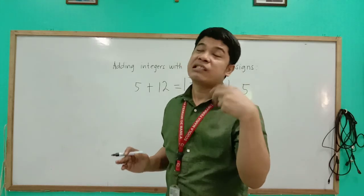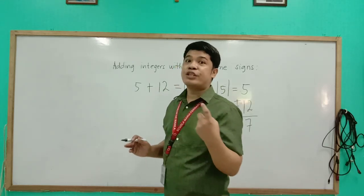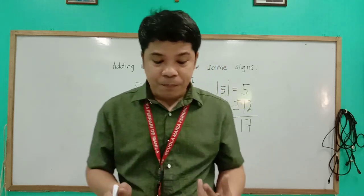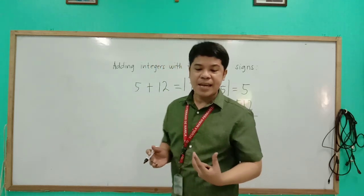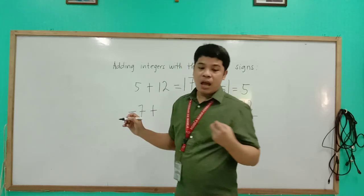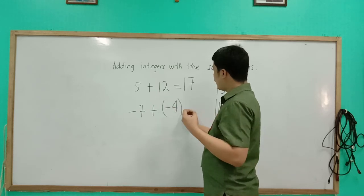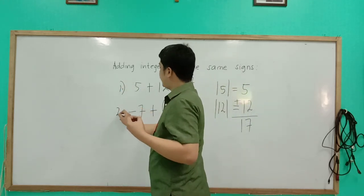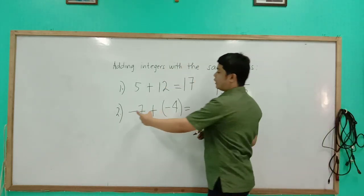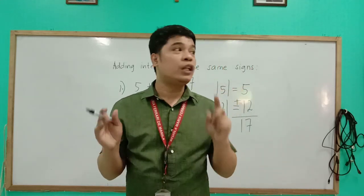For better understanding of this lesson, I will be discussing another problem. The second problem that we will be solving is negative 7 plus negative 4. So look at the numbers here — we have negative 7 plus negative 4. We'll follow the same steps.